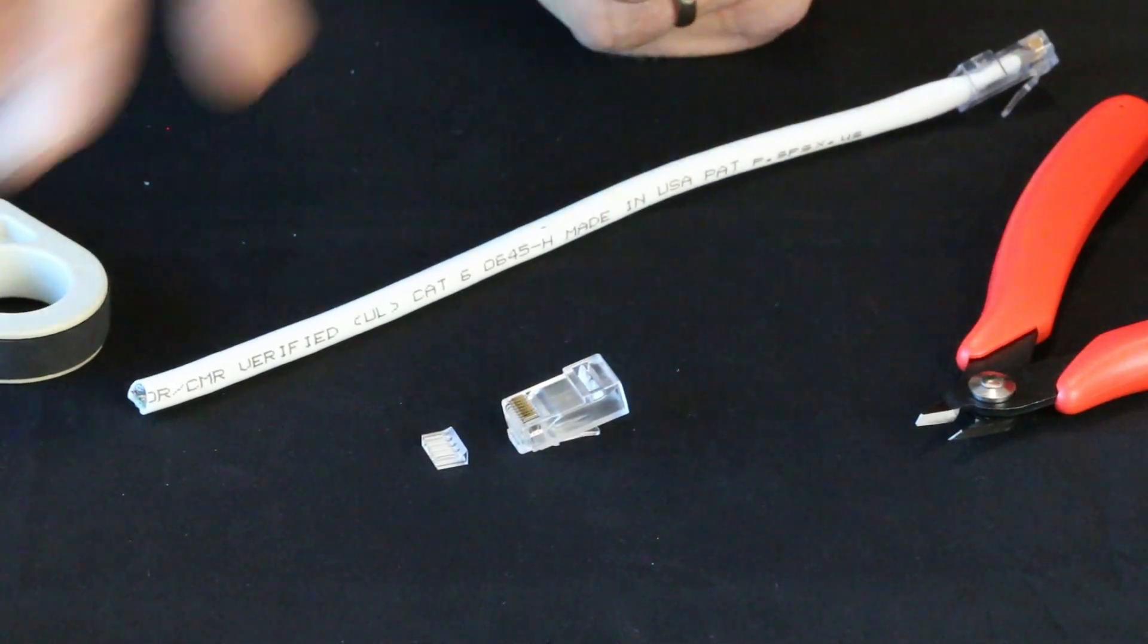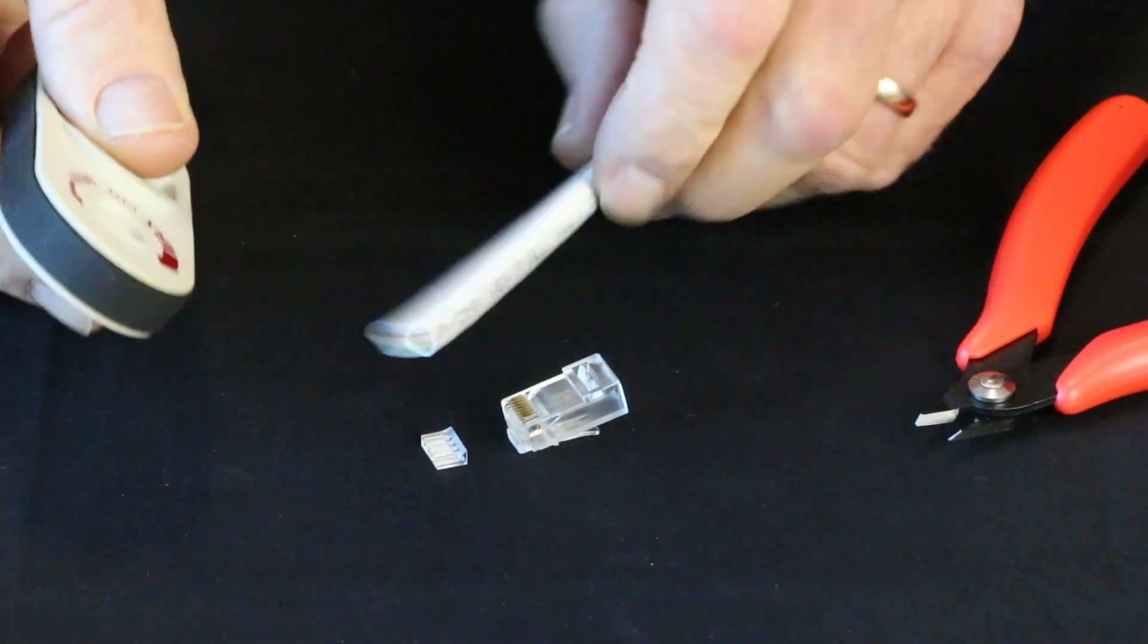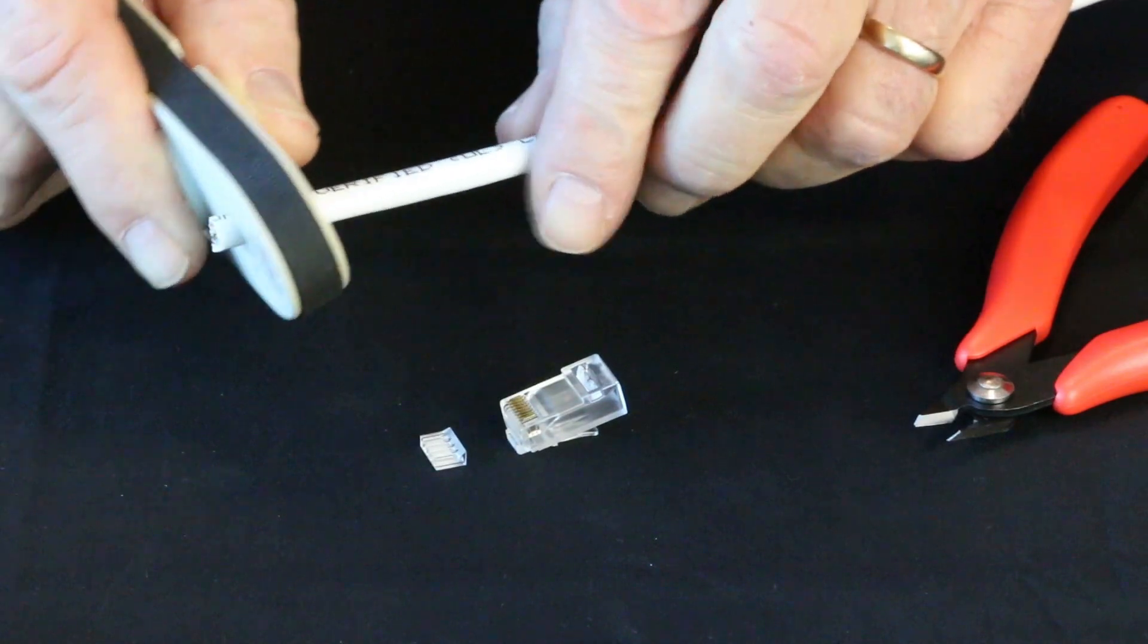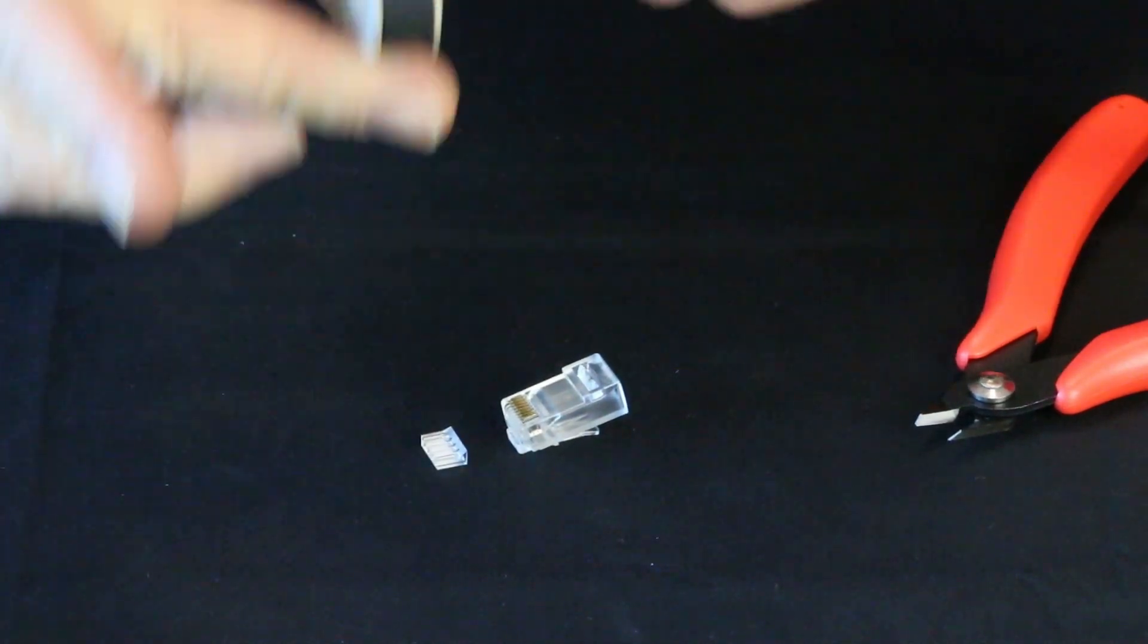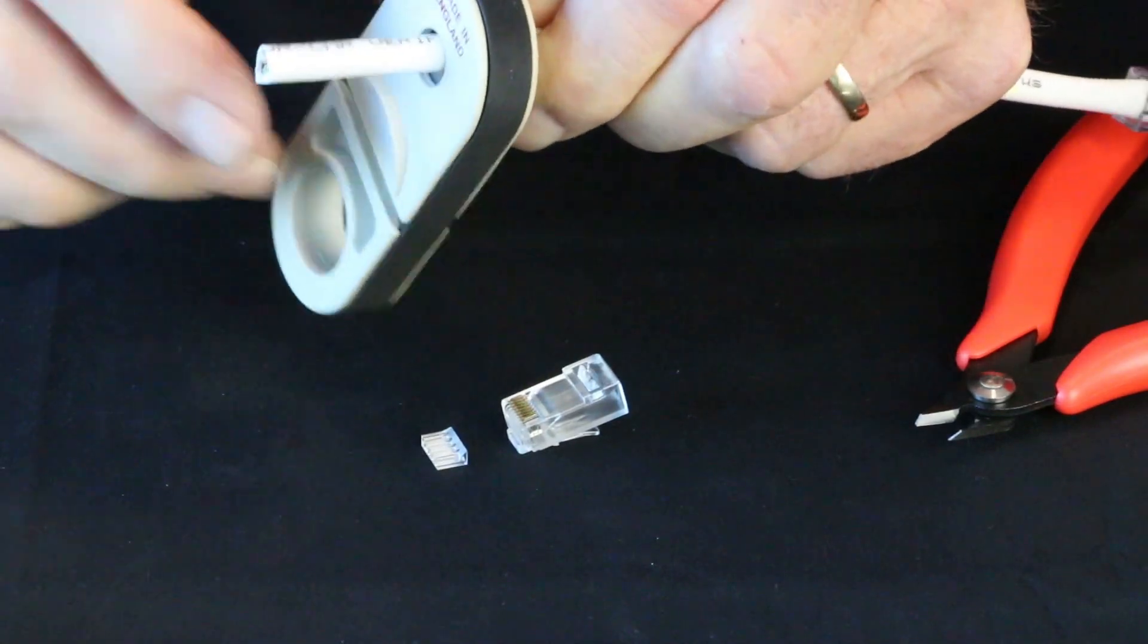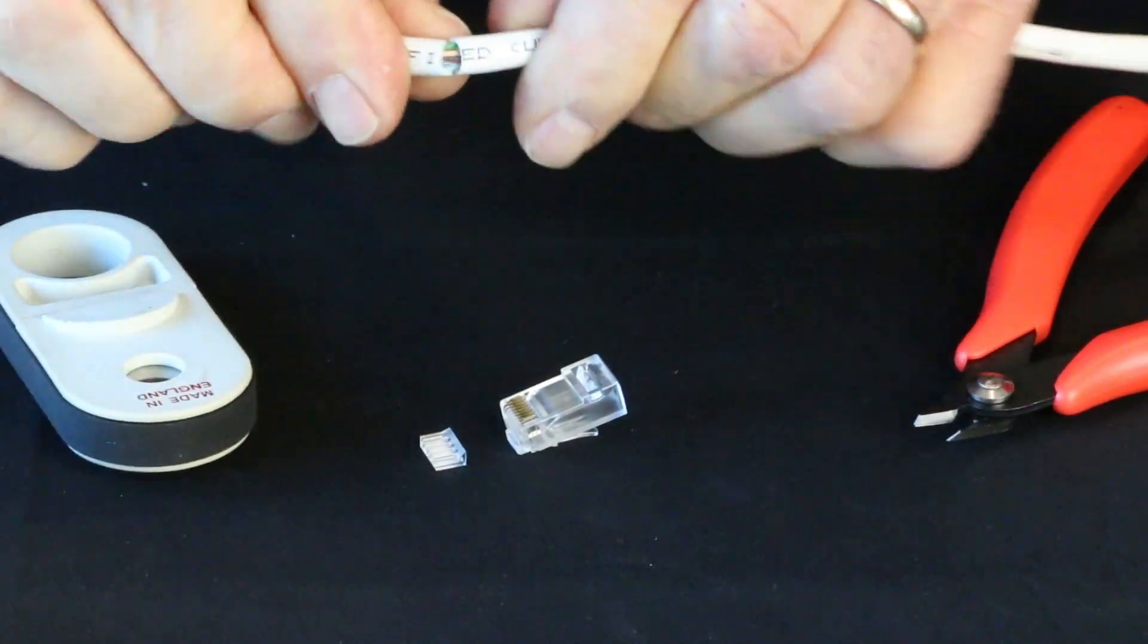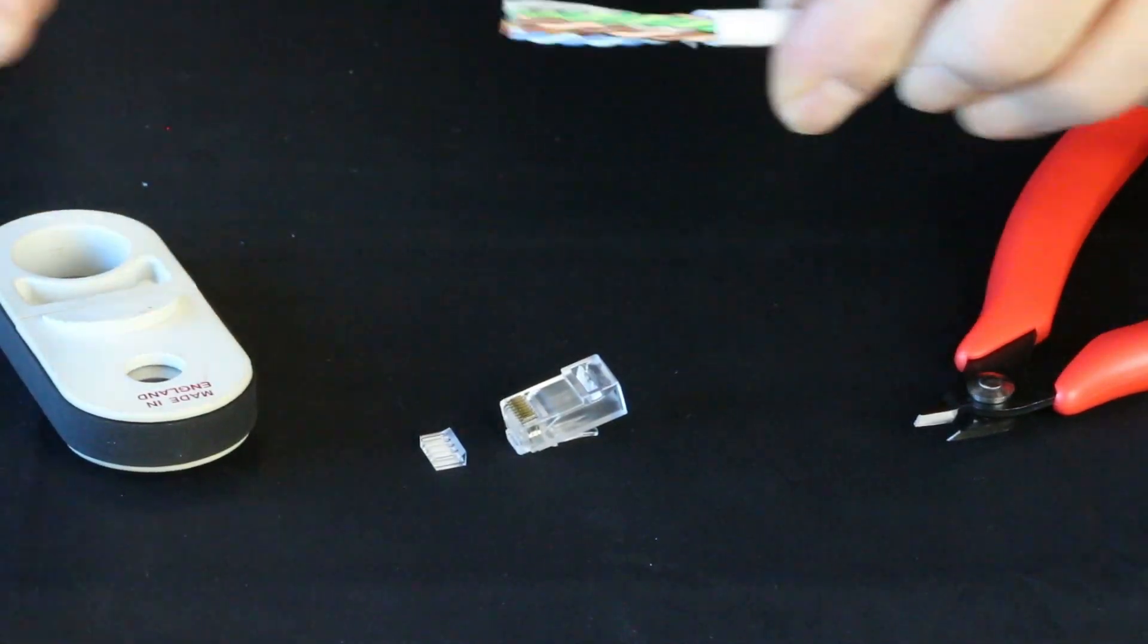Let's go ahead and terminate here. And the first thing we have to do, of course, is remove the jacket. So, I'm going to put my cyclops in. I'm going to stop about right there. And I'm going to go around twice, remove the tool, and then we break the jacket and slide that off.